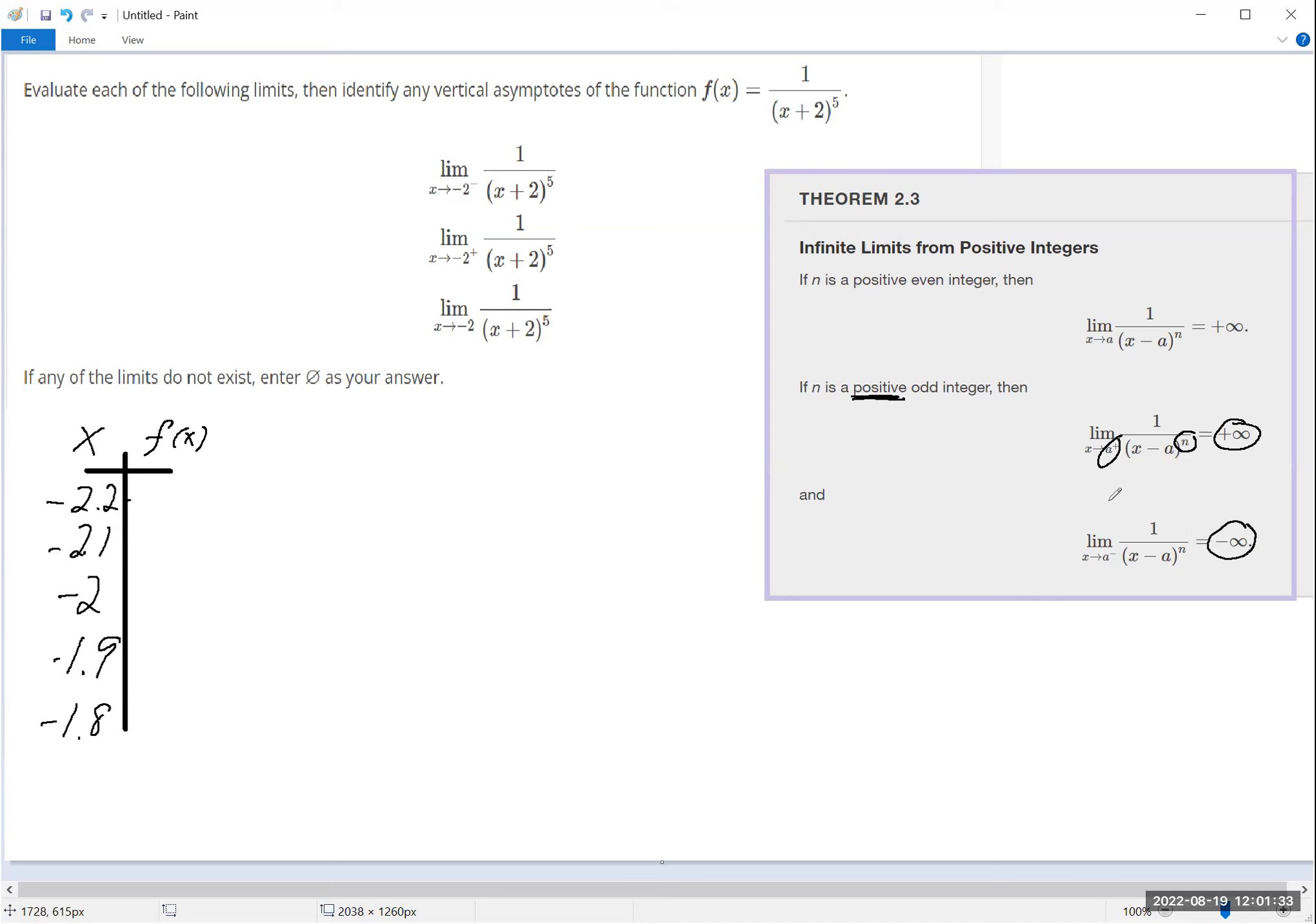But this is slightly different. This is x minus a, this is x plus 2, so it's like an x plus a. So it is a little different, and I think what we need to do is first consider something easier, which is 1 over x plus 2.